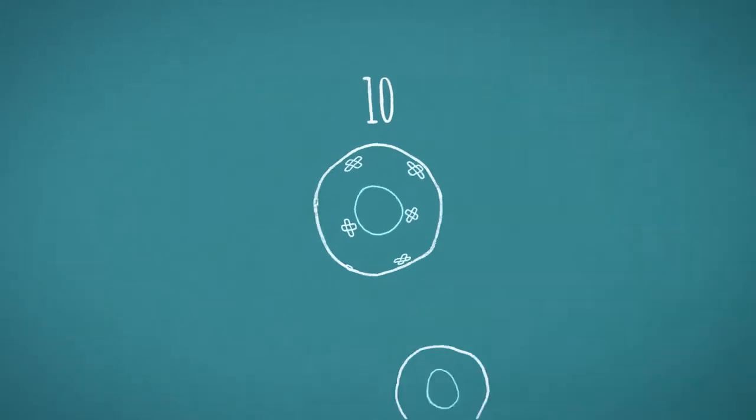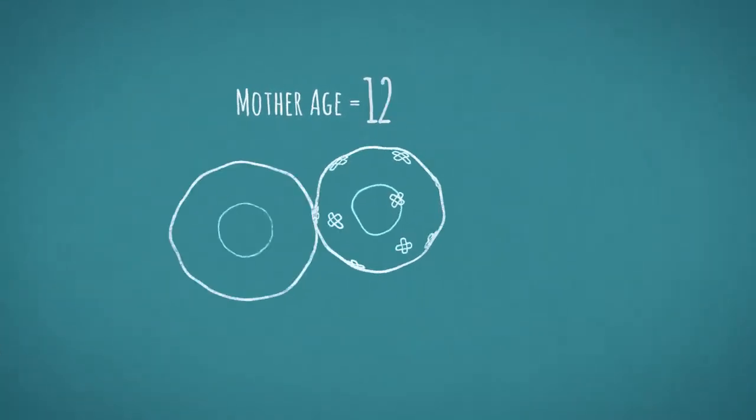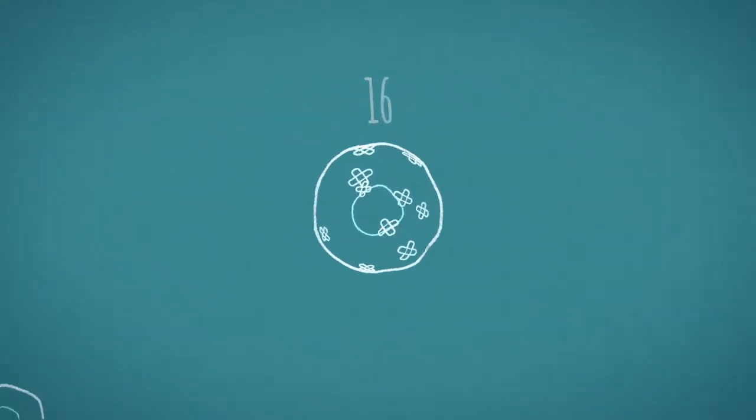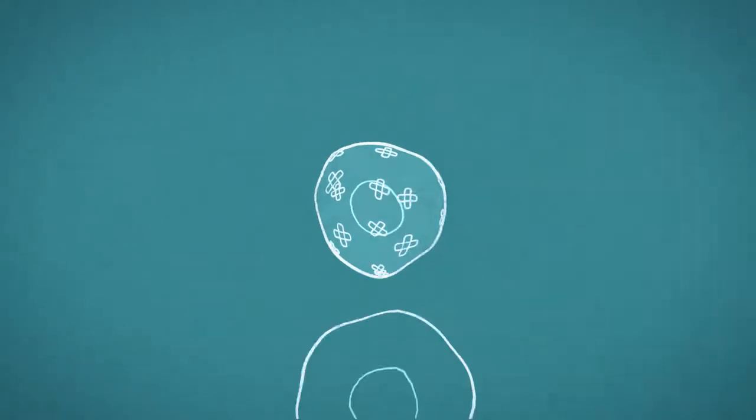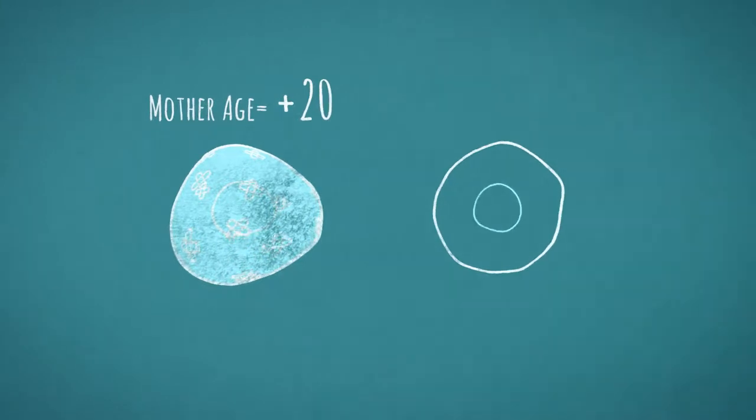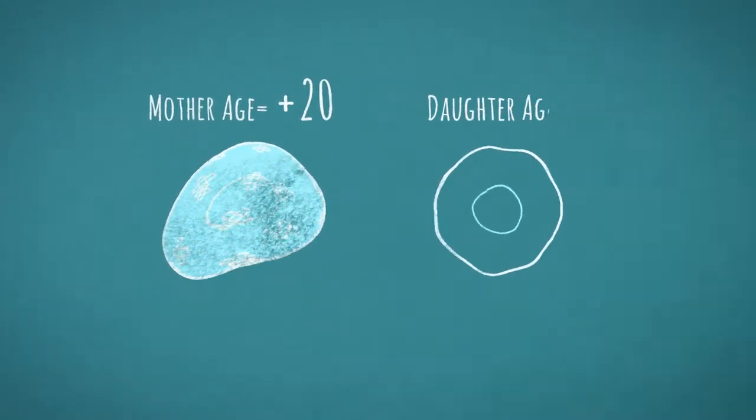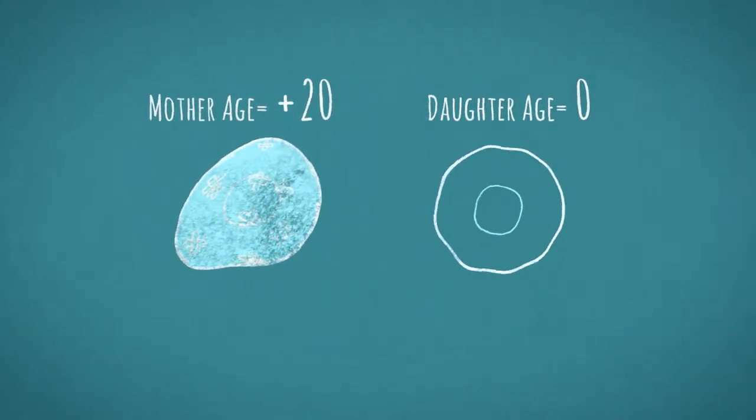A mother cell that has produced 10 daughters has 10 scars, and we say her replicative age is 10. After the cell has produced between some 20 to 30 daughter cells, it dies. The daughter cells have youthful characteristics. This must mean that the daughter cell did not inherit whatever it is that killed her mother.